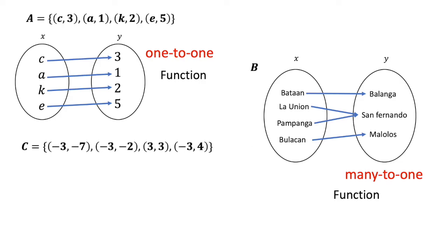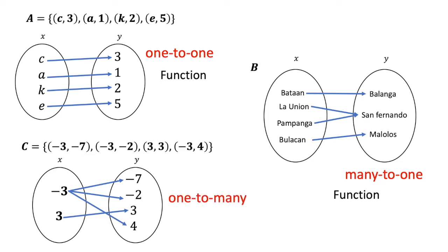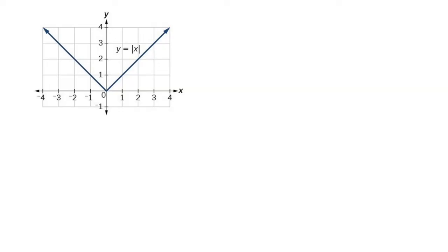On our last example for a mapping diagram, let's look at the set of ordered pairs. The relation is a one-to-many relation. The relation is not a function.